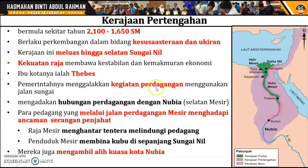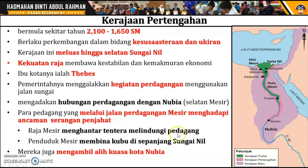Pemerintah juga menggalakkan kegiatan perdagangan dengan menggunakan jalan sungai. Kerajaan Mesir Pertengahan sudah pun mengadakan hubungan perdagangan dengan Nubia di bahagian selatan Mesir. Para pedagang yang melalui jalan perdagangan Mesir menghadapi ancaman serangan penjahat. Maka Raja Mesir telah menghantar tentera untuk melindungi pedagang. Penduduk Mesir juga membina kubur di sepanjang Sungai Nil. Akhirnya mereka berjaya mengambil alih kuasa kota Nubia, menjadikan Nubia berada di bawah kerajaan Mesir.